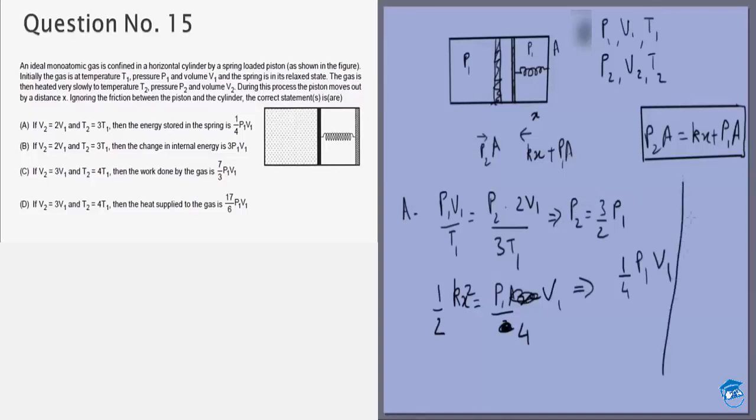Option B requires us to calculate the change in internal energy. That is simply 3 by 2 NR T2 minus T1. Internal energy is NcV delta T and we are given in the question that the gas is monoatomic. And T2 is equal to 3T1 minus T1, to 2T1. So we get 3 NR T1, which is equal to 3 P1V1. So option B is correct as well.